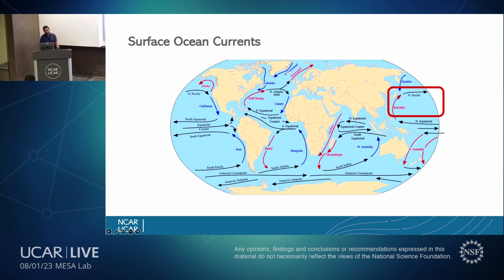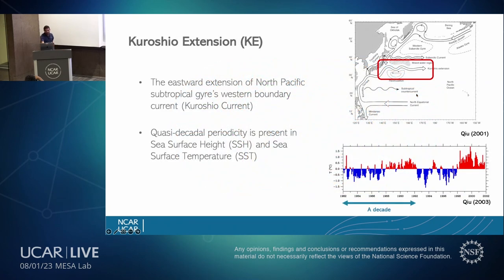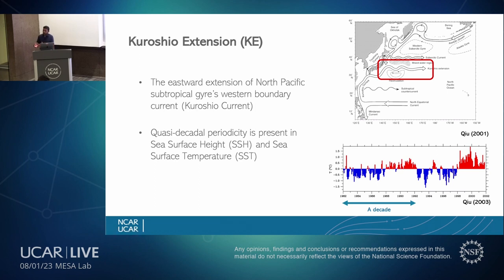Before reaching the extratropics, the Kuroshio current moves towards the central Pacific Ocean as an extension, which we call the Kuroshio Extension. It is the eastward extension of this subtropical gyre, and it brings a lot of warm water from the equatorial region to the northern regions. While doing so, it has shown a quasi-decadal periodicity in terms of sea surface height and sea surface temperature.